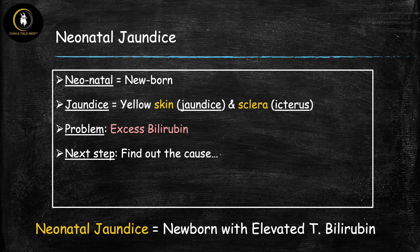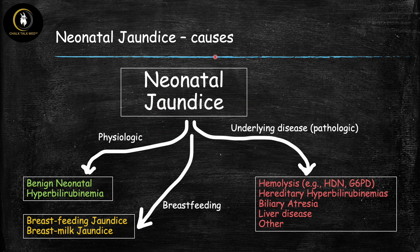Neonatal jaundice is caused by many different conditions, so it's helpful to organize them. The most common cause is physiologic, also known as benign neonatal hyperbilirubinemia. Closely associated, we have jaundice associated with breastfeeding, and there are two types: breastfeeding jaundice and breast milk jaundice. Finally, you have jaundice due to underlying diseases such as hemolysis. For the rest of this video, we're going to focus on the jaundice associated with breastfeeding and its two types.